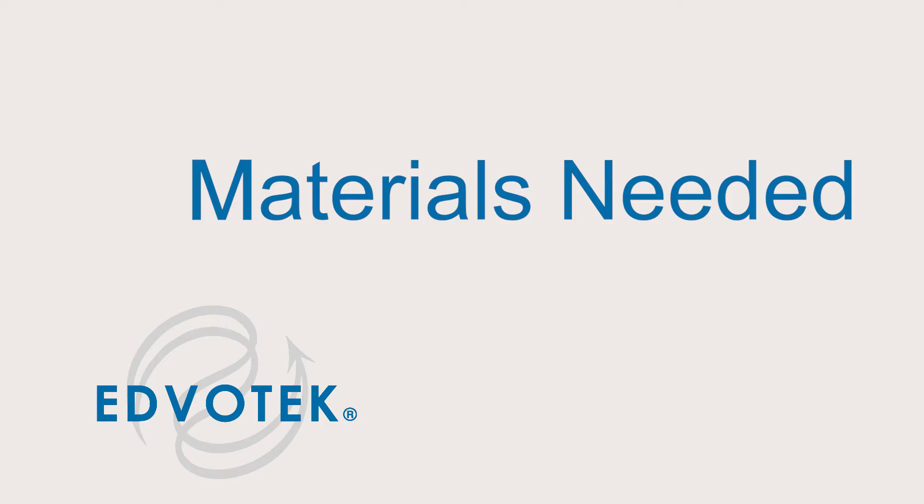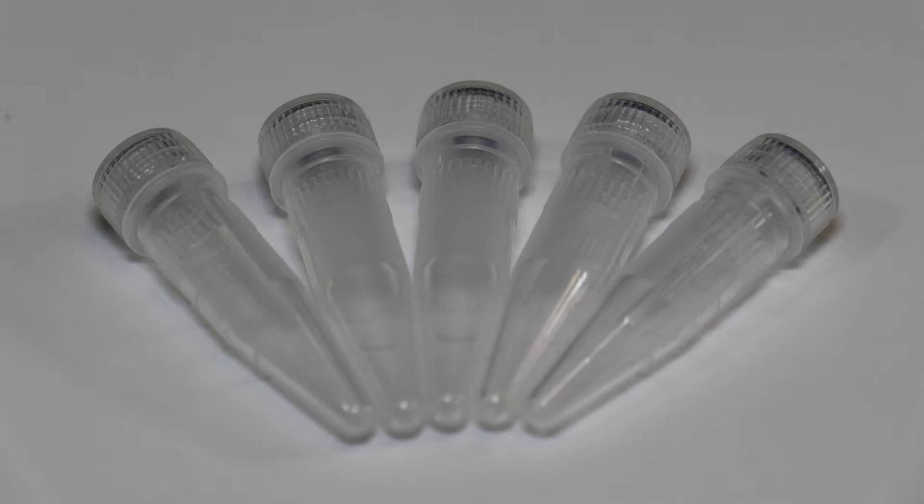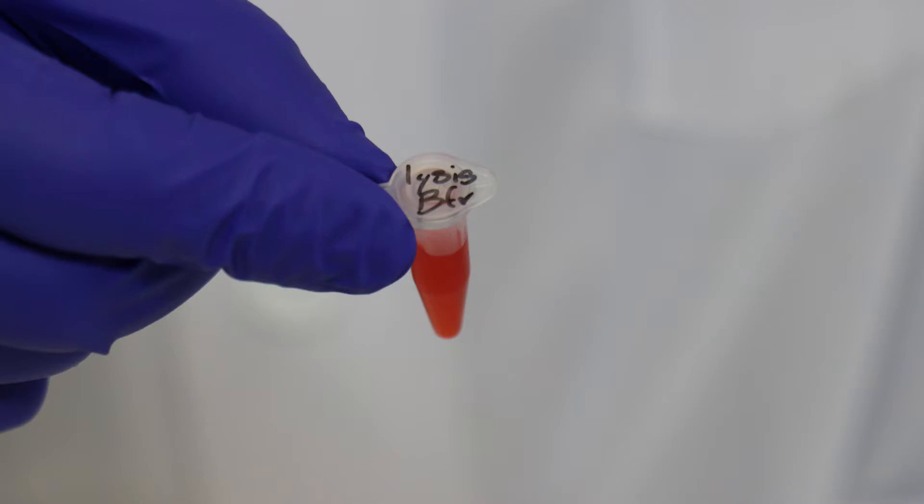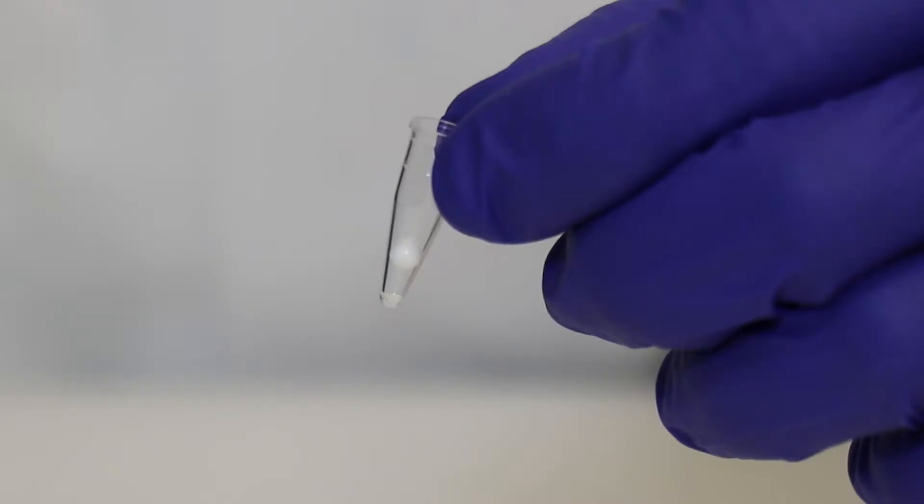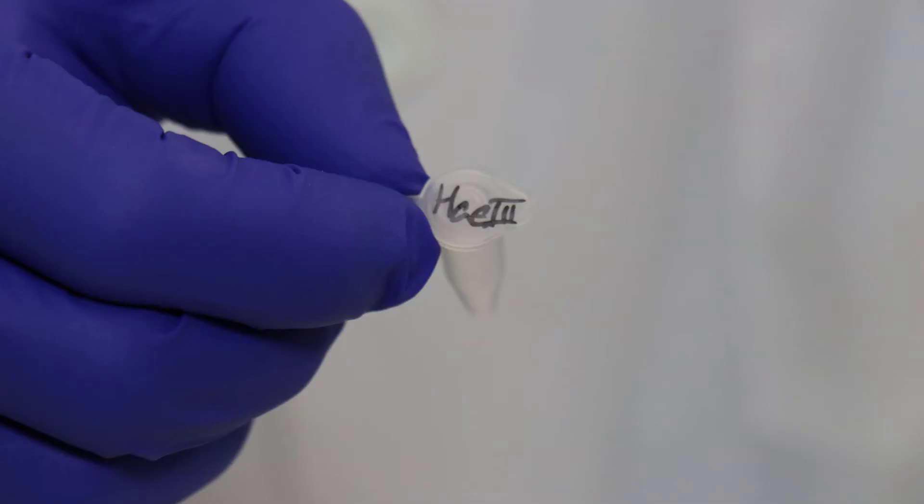Before beginning this experiment, you will need one cup containing 10 milliliters of saline solution, screw cap centrifuge tubes, snap top centrifuge tubes, 300 microliters of lysis buffer, one tube containing a PCR Edvo bead, 90 microliters of PTC primer.